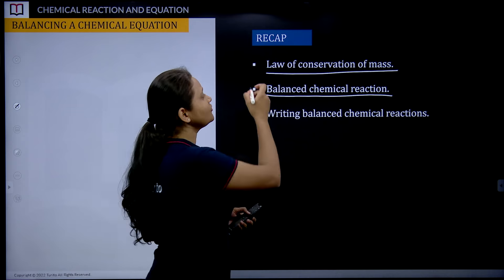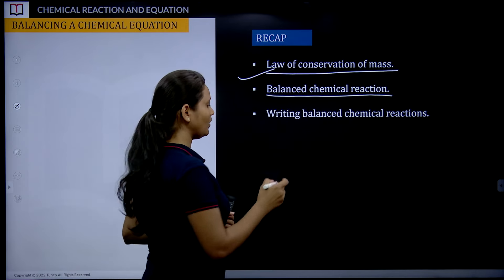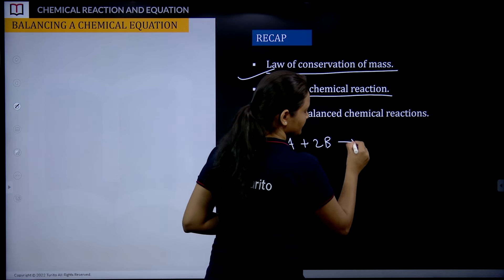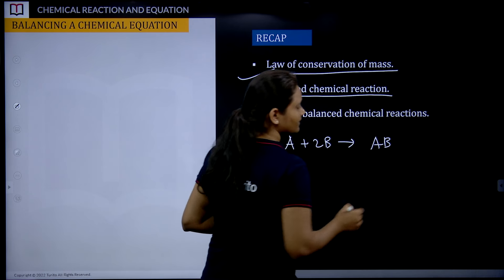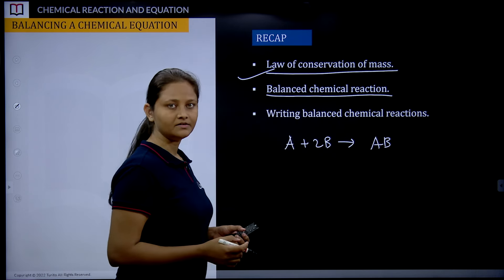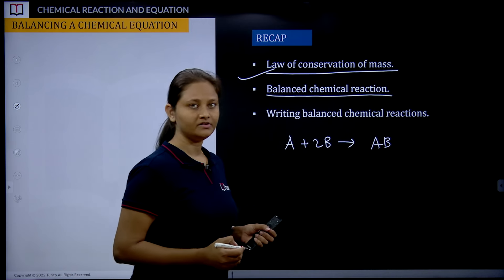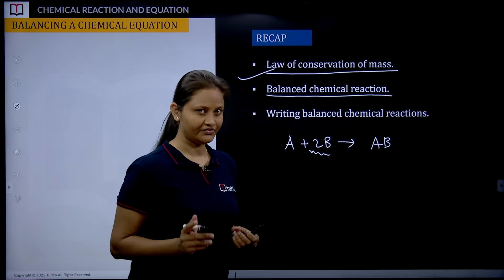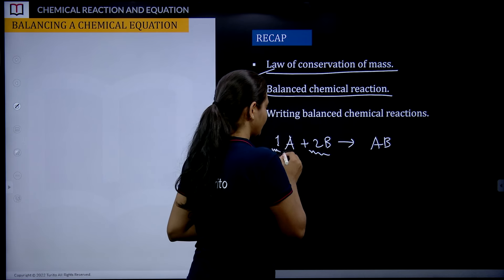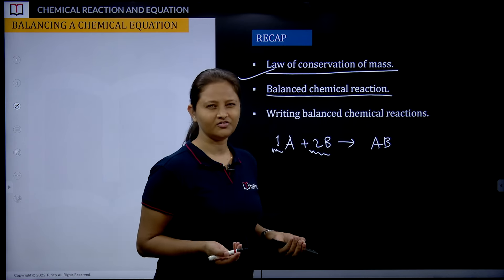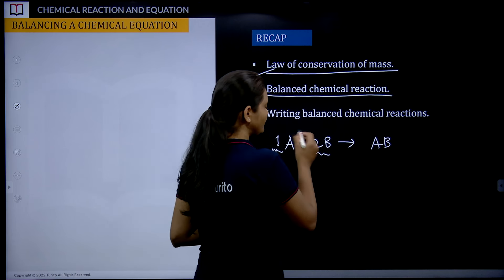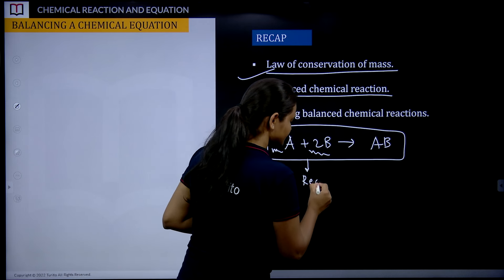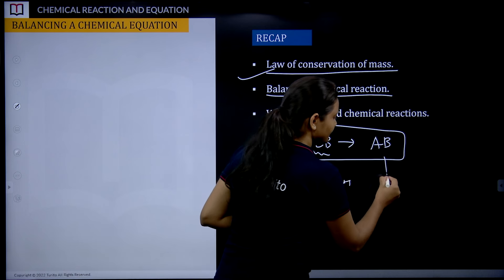It was based on the law of conservation of mass. If we have A reacting with B to give AB — this is the product, this is the chemical reaction. This is what your stoichiometric coefficient is. If nothing is written, it is understood to be one. So these are reactants and these are products.